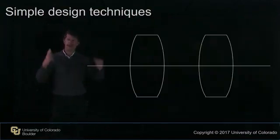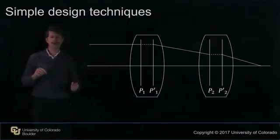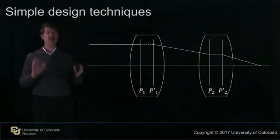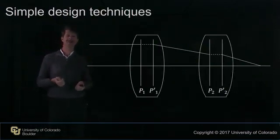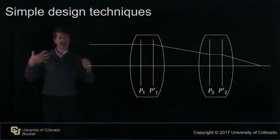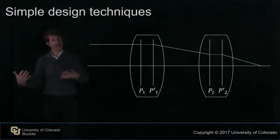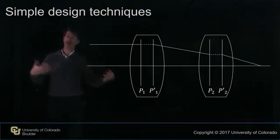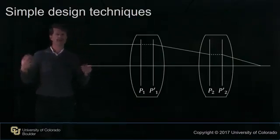So that we can take systems of lenses and reduce them to simple straight lines — because in this course everything's going to be straight lines — and analyze their properties, and design them to do something we want: to magnify, to image, something like that.